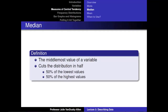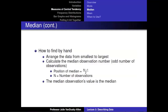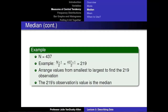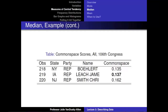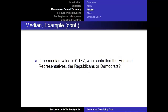The second measure of central tendency is the median — the middle-most value that cuts the variable in half, with the lowest 50% on one side and the highest 50% on the other. To find the median by hand, arrange values from smallest to largest, then find the median observation number. With an odd number of observations, the position equals (n + 1) / 2. In our common space score example with 437 observations: (437 + 1) / 2 = 219. Observation 219 has a value of 0.137, so the median is 0.137.